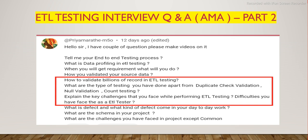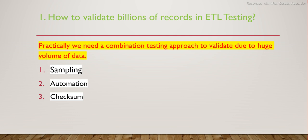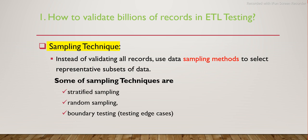Now let's look at the possible answers for each question. For question one - how to validate billions of records in ETL testing - there is no shortcut or one-liner answer. We need a combination of testing approaches. The three main techniques we will cover are: first, sampling; second, full-fledged automation; and third, checksum validation.